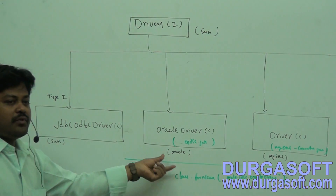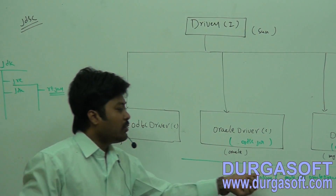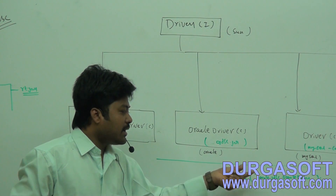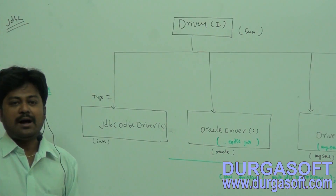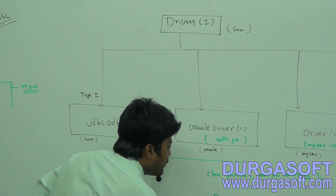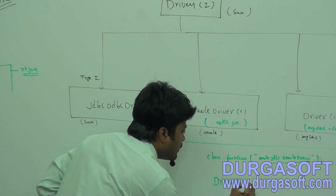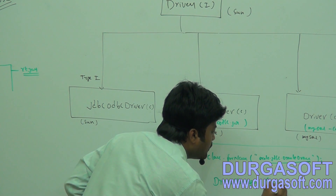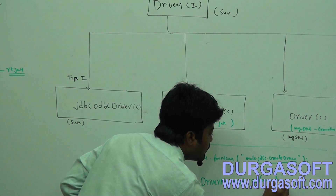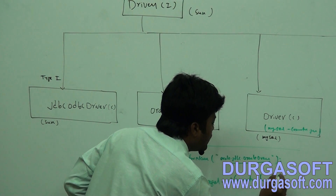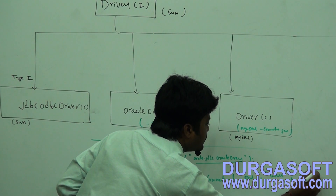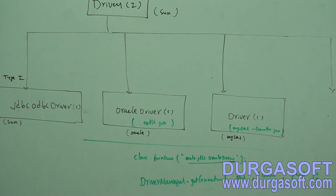We need to add these jar files to our application wherever we are going to load the oracle.jdbc.OracleDriver class. Once you add the jar file, that class will be available to your application. Then, once you load this driver, you call DriverManager.getConnection() and pass the URL, username, and password. It will then get a connection from your database.